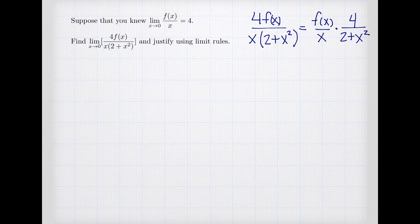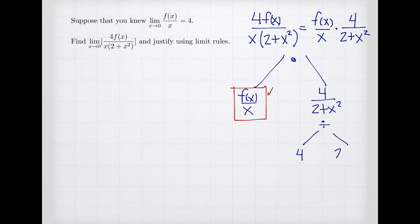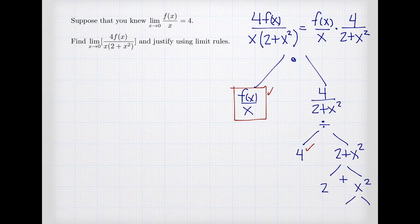Now I think of the entire expression as a product: f(x)/x times the quotient 4/(2+x²). I can start breaking this down into its parts. I've got f(x)/x as one formula and 4/(2+x²) as another. I already know the limit of f(x)/x. For the other formula, I think of it as a quotient: 4 on top and 2+x² on the bottom. The constant 4 is straightforward, and 2+x² is a sum of 2 and x², where x² is a product of x with itself.